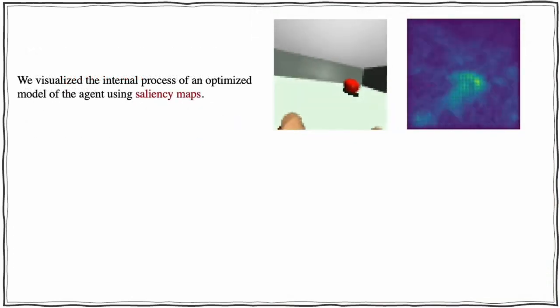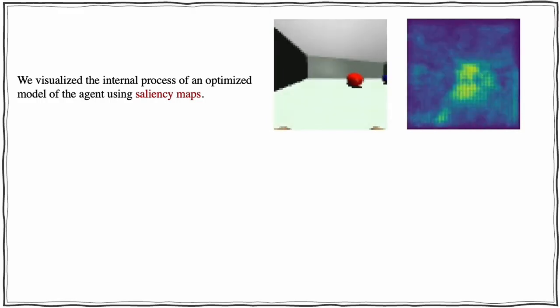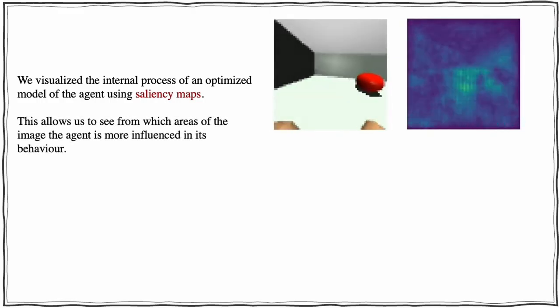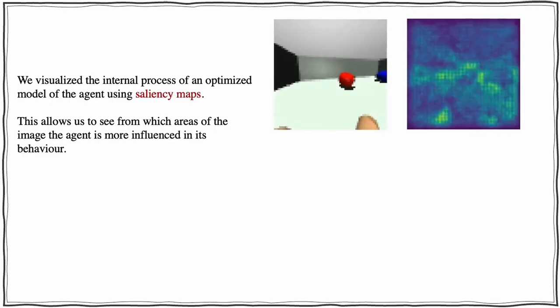We visualized the internal process of an optimized model of the agent using saliency maps. This allows us to see from which areas of the image the agent is more influenced in its behavior.